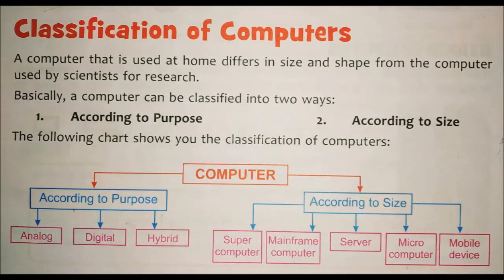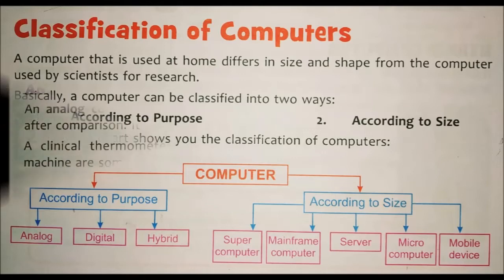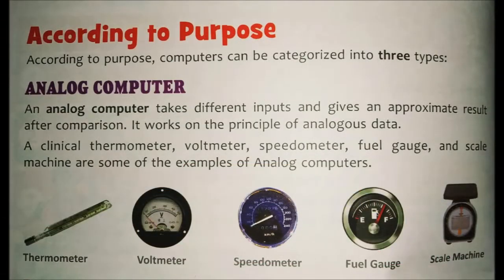Classification of computer according to purpose. According to purpose, computer can be categorized into three types: analog computer, digital computer, hybrid computer. An analog computer takes different inputs and gives an approximate result after comparison. Analog computer works on the principle of analogous data.